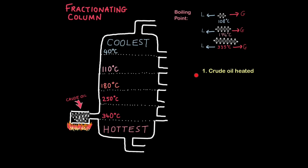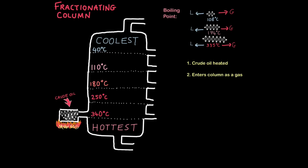So in step one the crude oil is heated in a furnace. Step two, once it's heated the crude oil becomes a gas and enters the column as a gas. Now remember that these don't represent single molecules but rather this one for example represents all the molecules in crude oil of this size. So let's focus on the largest molecules first which have a boiling point of 335 degrees celsius.